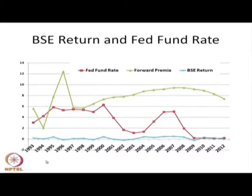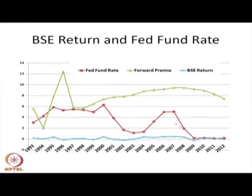I have drawn a graph taking into account BSE return and the fed funds rate, to check whether there is a relation. The BSE return is the blue line; the forward premium is the green line; the fed funds rate is the red line. Looking at the graph, we cannot decisively determine if there is any relationship among them — the long-run tendency is that all are declining, but no clear pattern relationship is evident. However, FIIs coming to India are investing in the stock market, and the return from the stock market pulls FII to the Indian market.